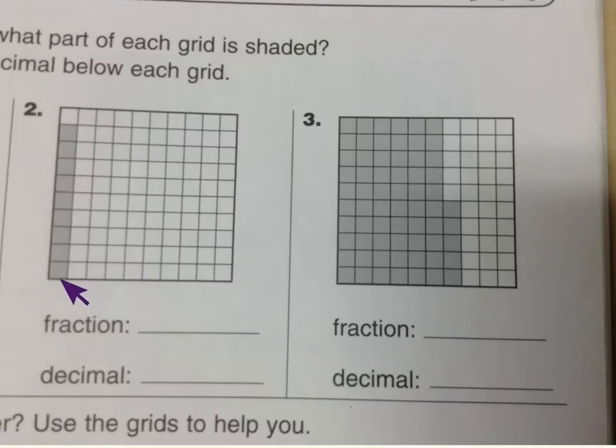For the next one, number two, we are going to notice now that this column is not filled in all the way. So we can't go by tenths anymore because this column is not filled completely. So now we need to go by every little box in this square.